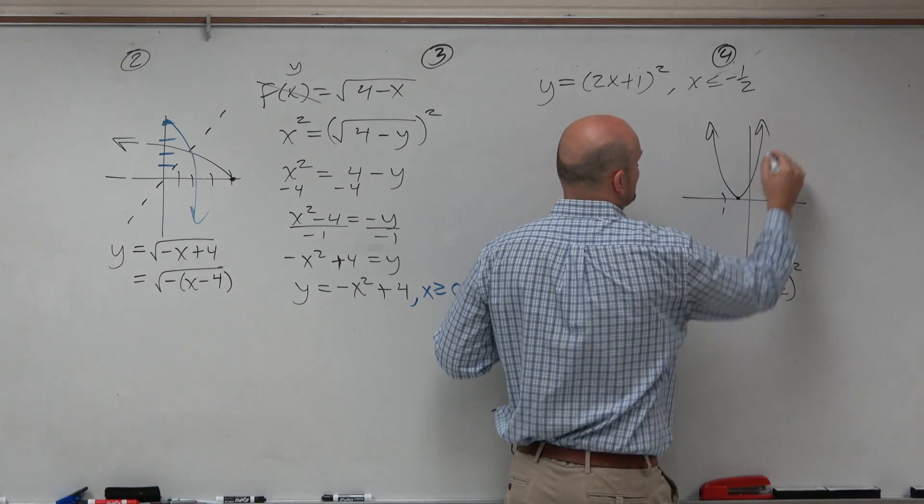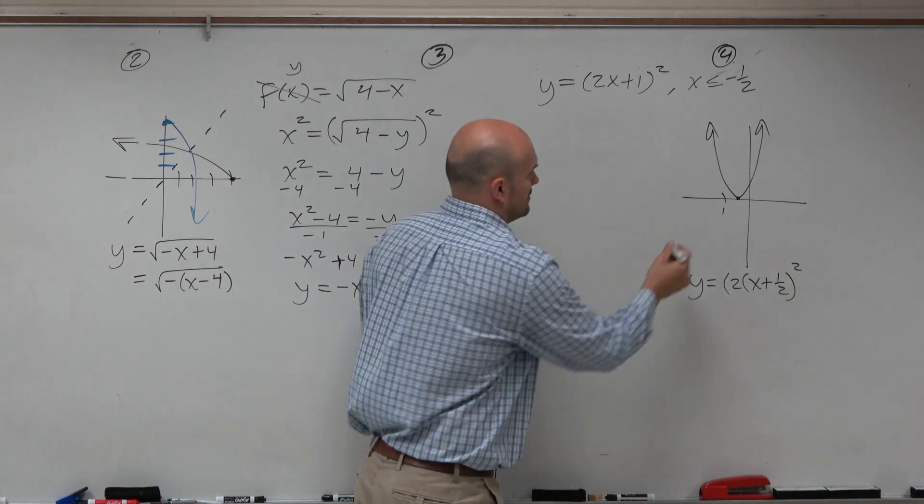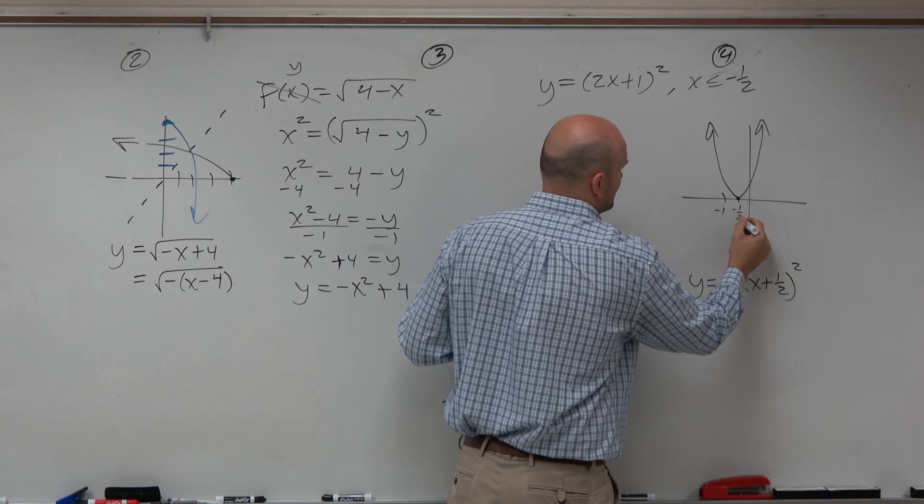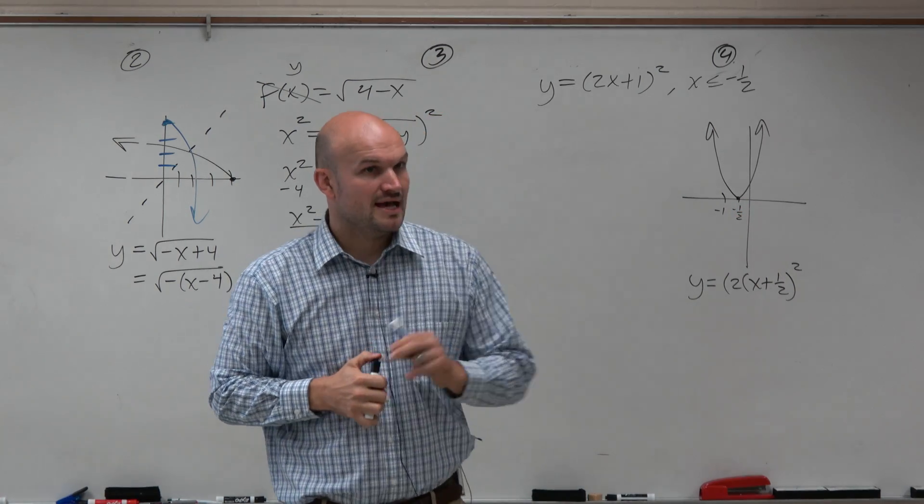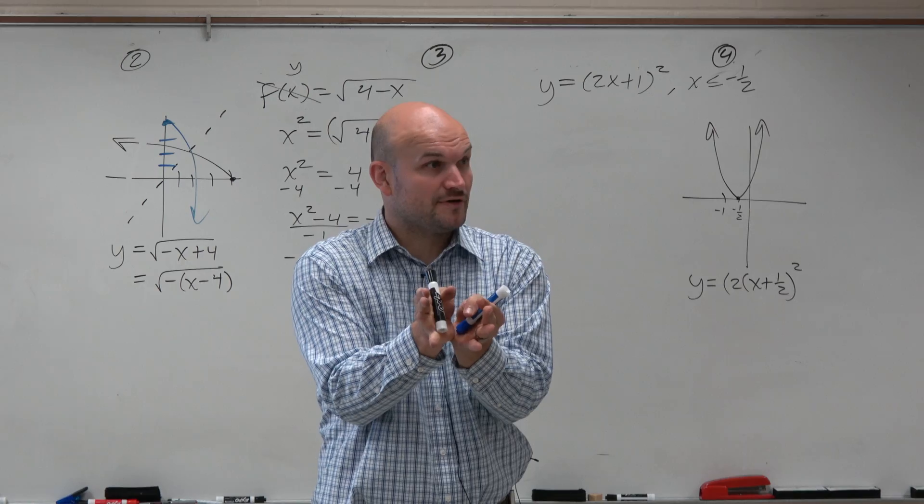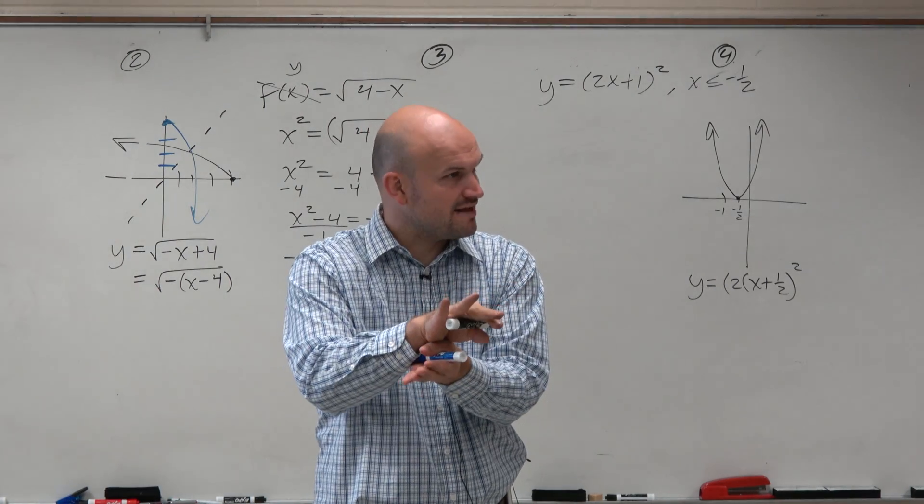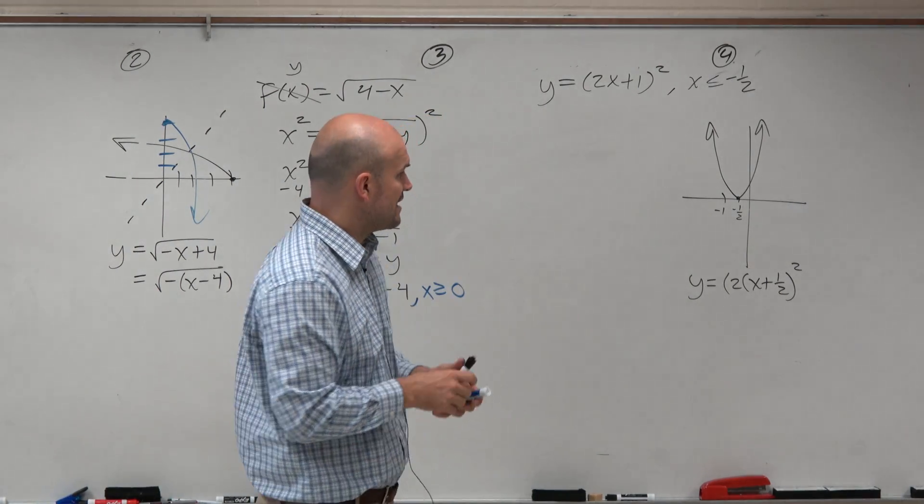So your graph probably looks something like this. If there's negative 1, that would be negative 1½. And we know, right, as far as that graph goes, it doesn't pass the horizontal line test, so it doesn't have an inverse. The function, it's not invertible. The inverse is not a function.